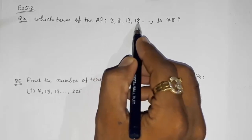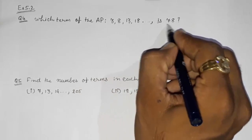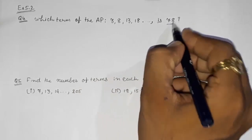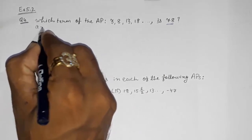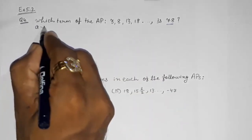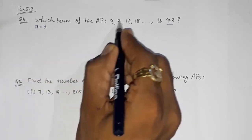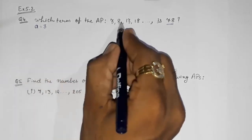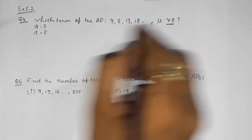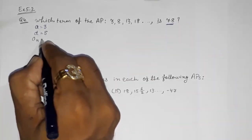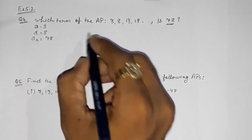We have to find out which term is 78. For that, first we make a list of what numbers we have. The first term a is 3. The common difference d is 8 minus 3 or 13 minus 8, that is 5. So our difference d is 5, and the nth term an is 78, because we want to find which term equals 78.